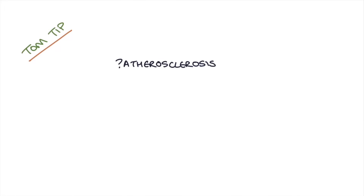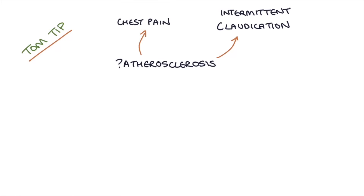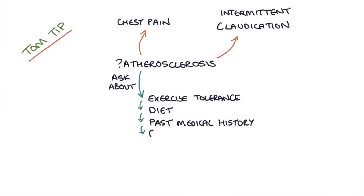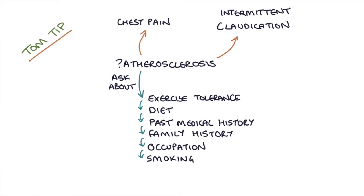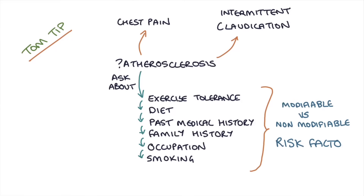Here's a Tom tip. When taking a history from someone you suspect has atherosclerotic disease — someone presenting with chest pain or intermittent claudication of the lower limbs — ask them about their exercise tolerance, diet, past medical history, family history, occupation, and smoking. Really think about what their modifiable and non-modifiable risk factors are. This will score you highly in exams and is useful when presenting to seniors or assessing someone's actual risk of having that condition.